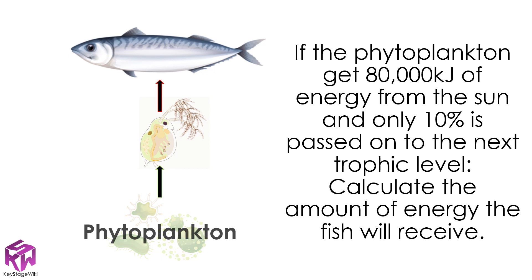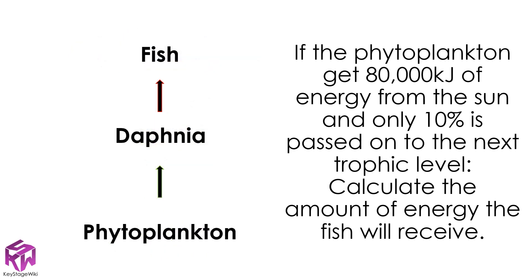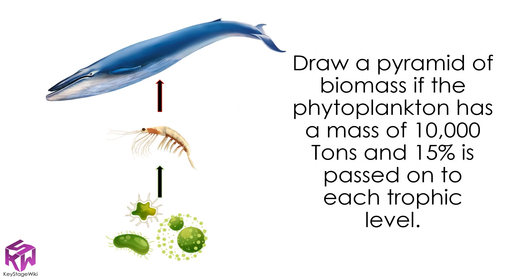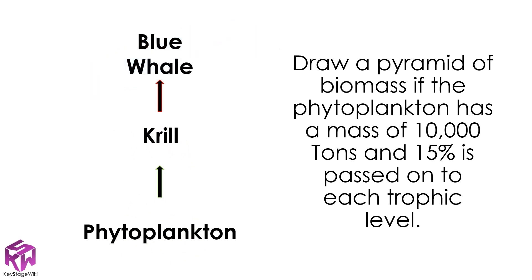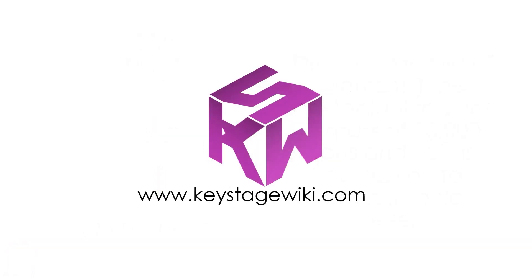The answers to the following questions will be shown at the end of the video. Using this food chain, calculate the amount of energy the fish will receive — pause the video now to give it a try. For this food chain, draw a pyramid of biomass to show how much biomass will be available at each trophic level. For more information on food chains, visit keystagewiki.com, and for further videos, like the video and subscribe to this channel.